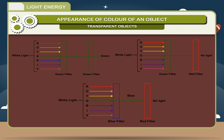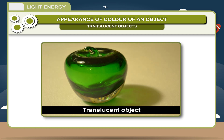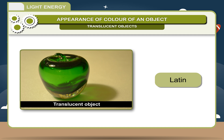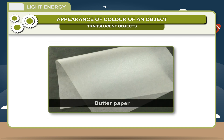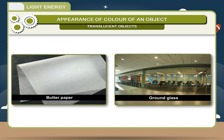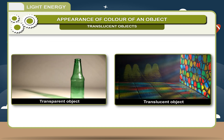The color of transparent bodies depends upon the color of light which they are able to transmit. Translucent objects: the adjective translucent is derived from Latin 'translucence', meaning shining through. Translucent objects allow light to pass through but objects on the other side cannot be seen clearly. Examples include butter paper and ground glass. The difference between transparent and translucent objects is that a transparent object allows you to see objects on the other side clearly, but a translucent object does not.